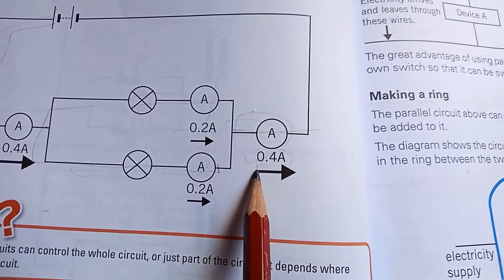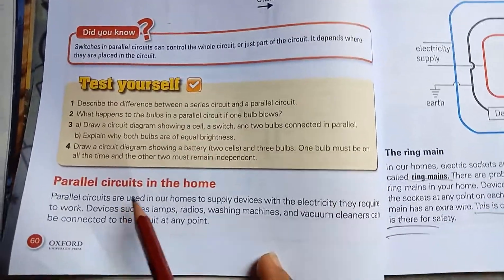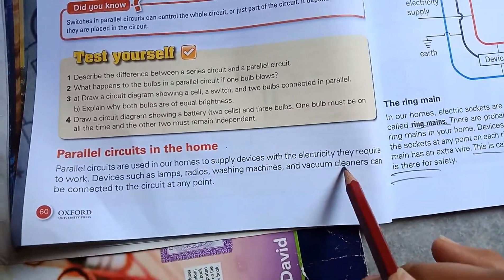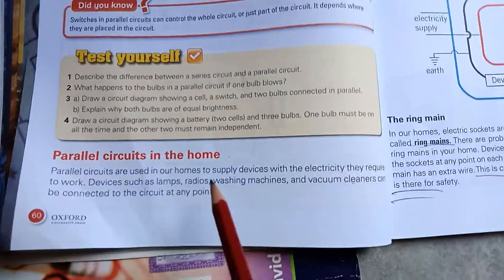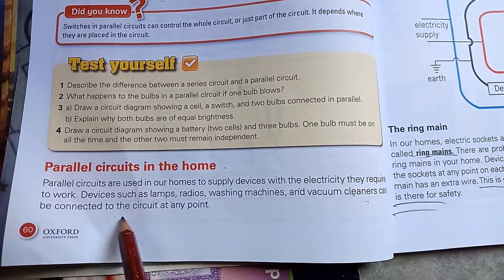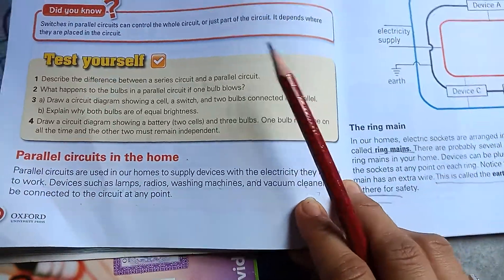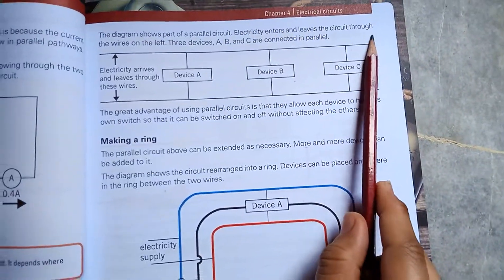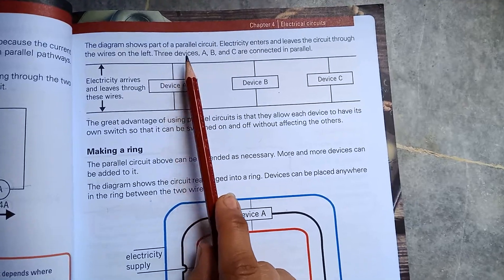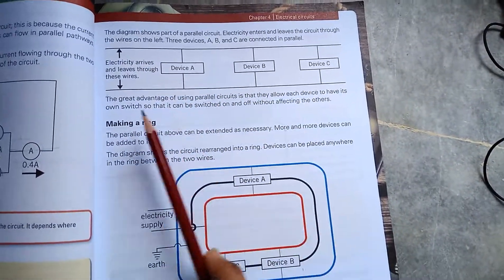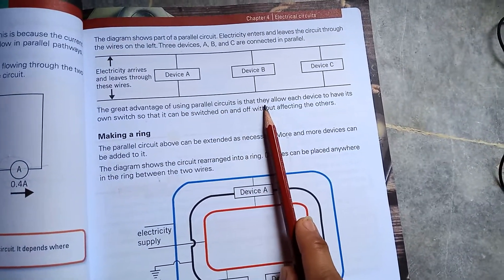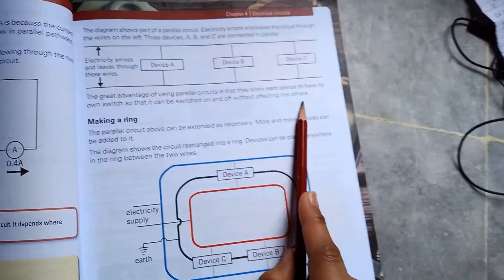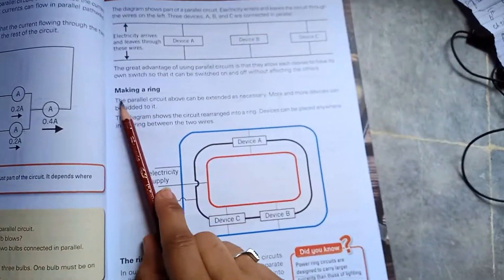Parallel circuits in our homes: Parallel circuits are used in our homes to supply devices with the electricity they require. Devices such as lamps, radios, washing machines, and vacuum cleaners can be connected to the circuit at any point. The great advantage of using parallel circuits is that they allow each device to have its own switch so it can be switched on and off without affecting other devices.